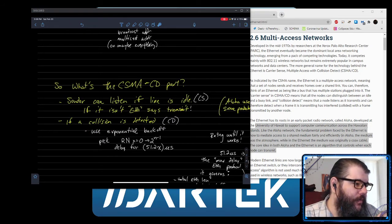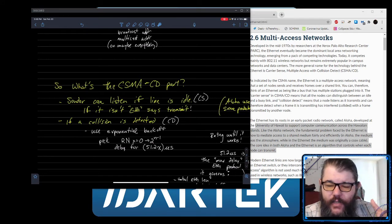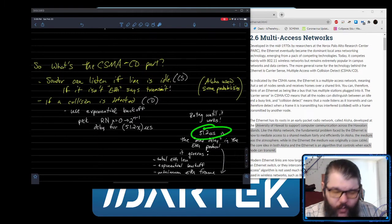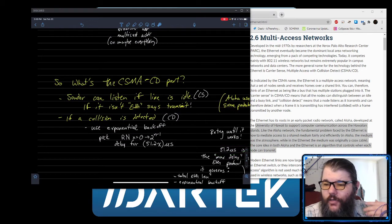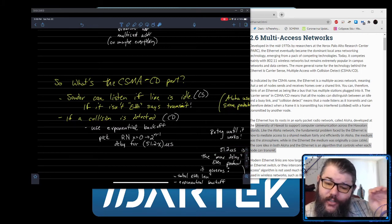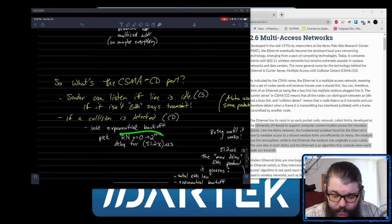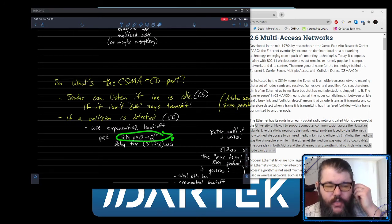The general idea is that if I detect a collision as I was sending a message, then what I'll do is I'll wait either zero microseconds or one time delta. The time deltas here are going to be 51.2 microseconds, which I'll explain in a second. Then I'll transmit. If two people do that, then you have a chance of colliding again.